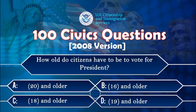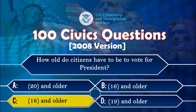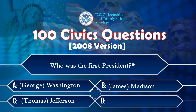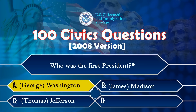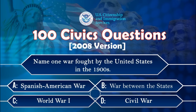How old do citizens have to be to vote for president? Eighteen and older. Who was the first president? George Washington. Name one war fought by the United States in the 1900s. World War I.